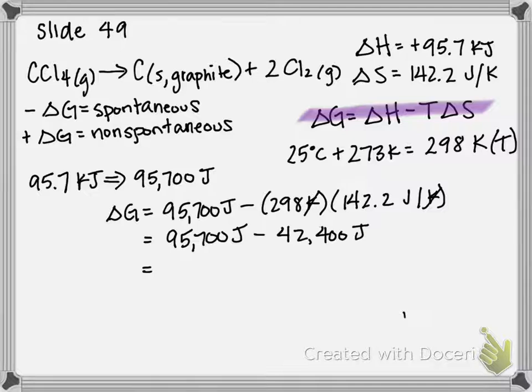we should get positive 53,300 joules. So our delta G is positive, which means my reaction is non-spontaneous.